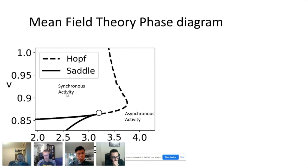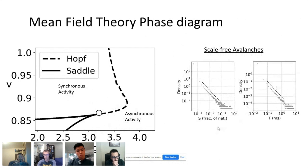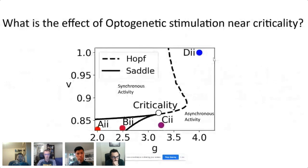Those lead to synchronous activity patterns and you can get there through the Hopf bifurcation or through a saddle node bifurcation. When we look at a point which is not through the Hopf or the saddle node but near both of them, here we do find the scale-free avalanches. So our model is showing criticality. Now we can return to this question that we want to answer with theory: what is the effect of optogenetic stimulation near criticality? With this model we can look at a number of points that are on the stable side, in the asynchronous side of activity.